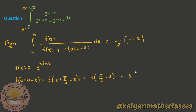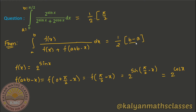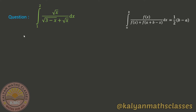So f(x) = 2^sinx substituted in. Using the formula, the answer is (1/2)(b - a) = (1/2)(π/2 - 0). So the answer will be π/4.